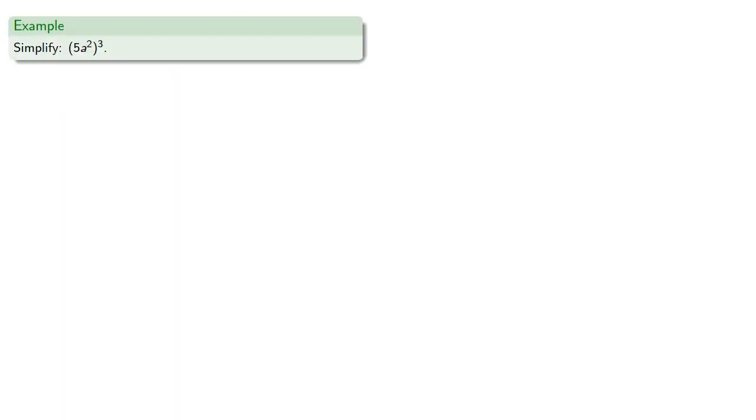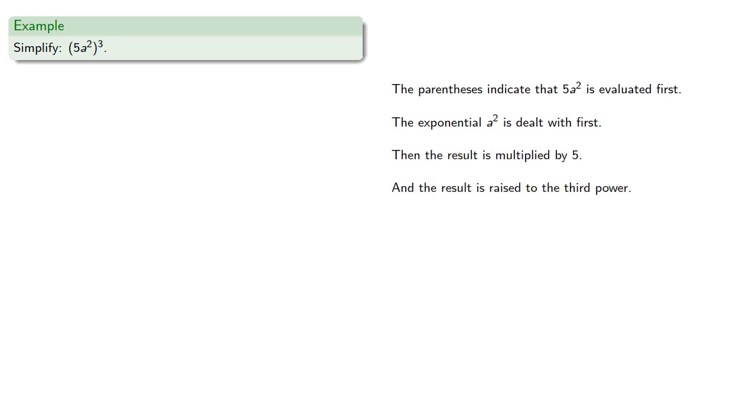Let's consider the simplification of something like this. The parentheses indicate that five a to the second is evaluated first. The exponential a to the second is dealt with first, then the result is multiplied by five, and then the whole thing is raised to the third power.